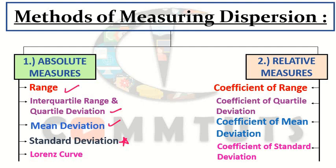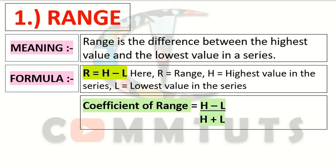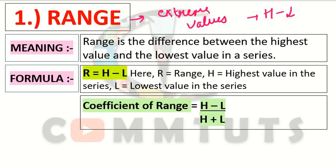To overcome these limitations, we have introduced the fourth method which is standard deviation. The first method is the range method. The range method depends only on extreme values — that is, the highest value in your series minus the lowest value gives you the range. So the biggest limitation of range was that all values in the series are not included; only extreme values are considered.